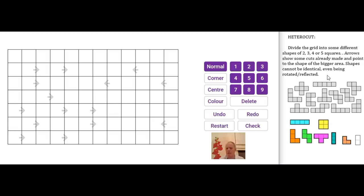I've written the rules up here. You have to divide this grid into some different shapes of two, three, four or five squares. Arrows shown show some cuts already made and point to the shape of the bigger area from the smaller ones. So shapes cannot be identical even being rotated or reflected. That's clearly very important.